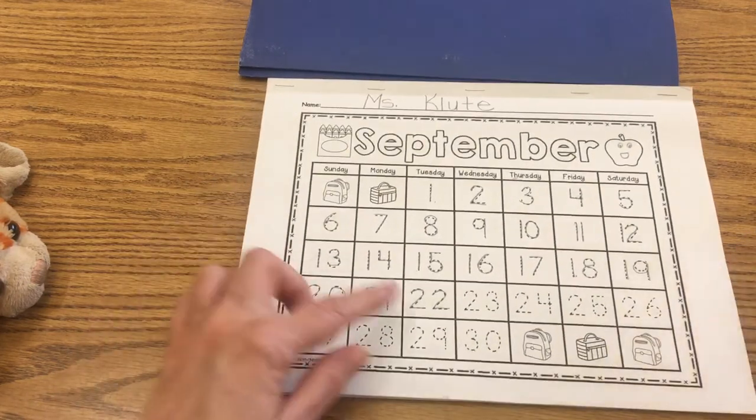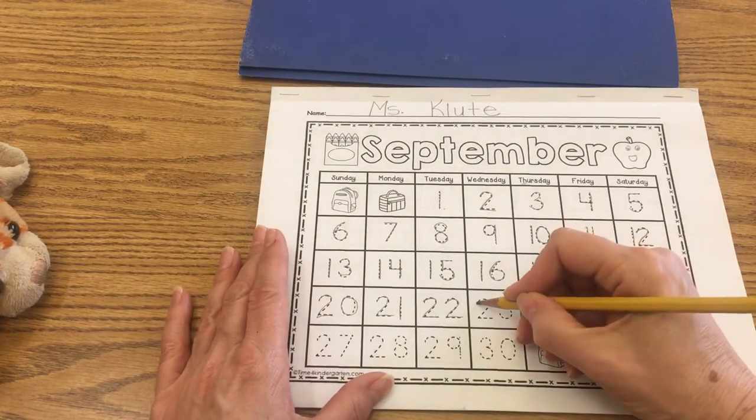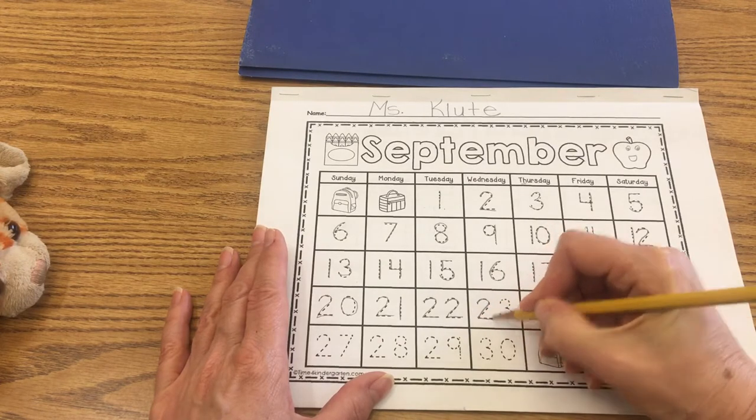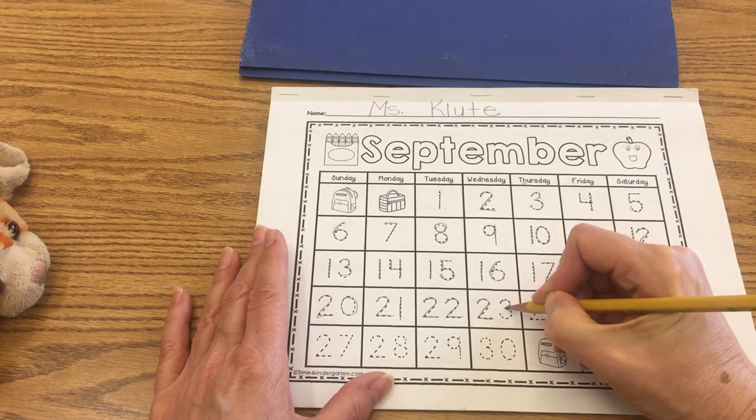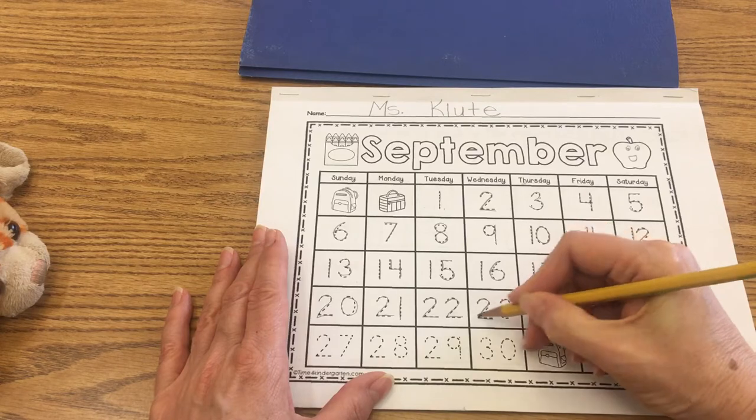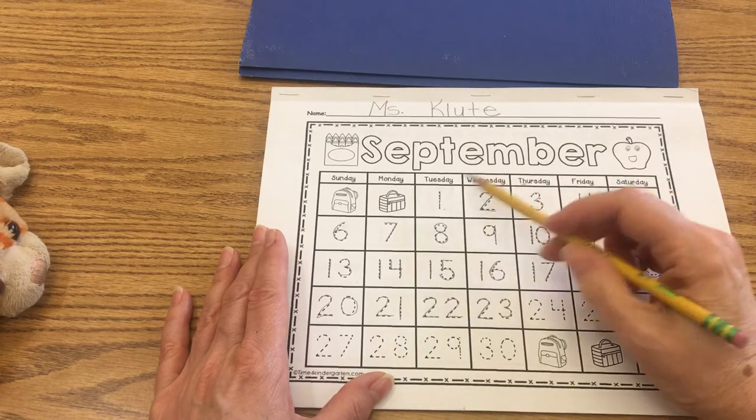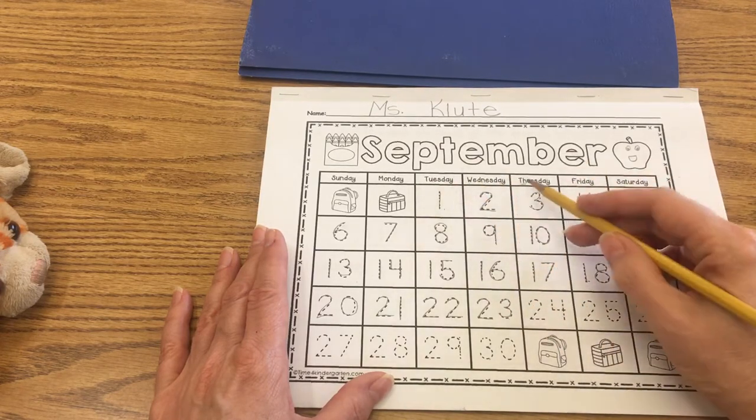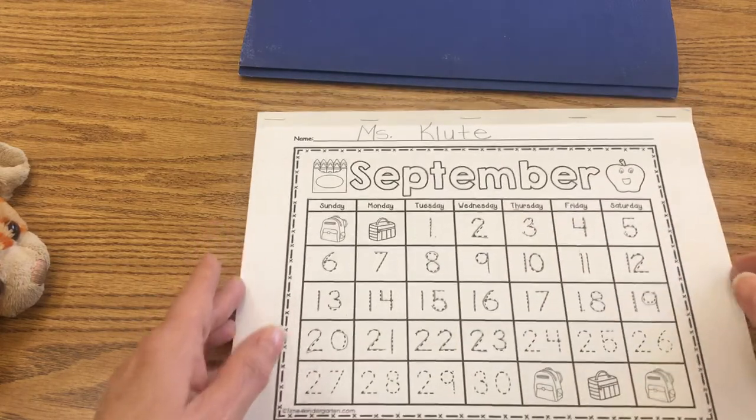So we do need to fill in 23 here. Okay, so today is the 23rd of September, and that's a two and a three together. Today is Wednesday. Yesterday was Tuesday. Tomorrow will be Thursday. And let's focus on that 23.